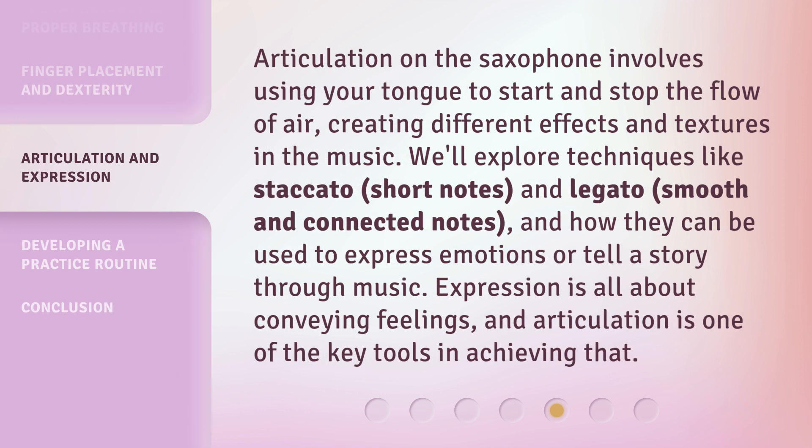Articulation on the saxophone involves using your tongue to start and stop the flow of air, creating different effects and textures in the music. We'll explore techniques like staccato (short notes) and legato (smooth and connected notes), and how they can be used to express emotions or tell a story through music. Expression is all about conveying feelings, and articulation is one of the key tools in achieving that.